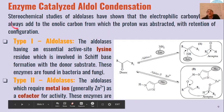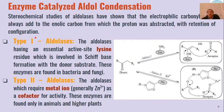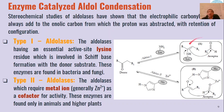Stereochemically, there are two types of aldolases. Type 1 aldolases have a lysine residue at the active site, whose NH2 group condenses with the carbonyl group of the donor substrate to form a Schiff base. This Schiff base then reacts with the acceptor molecule to yield the aldol product. Type 1 aldolases are found in bacteria and fungi.